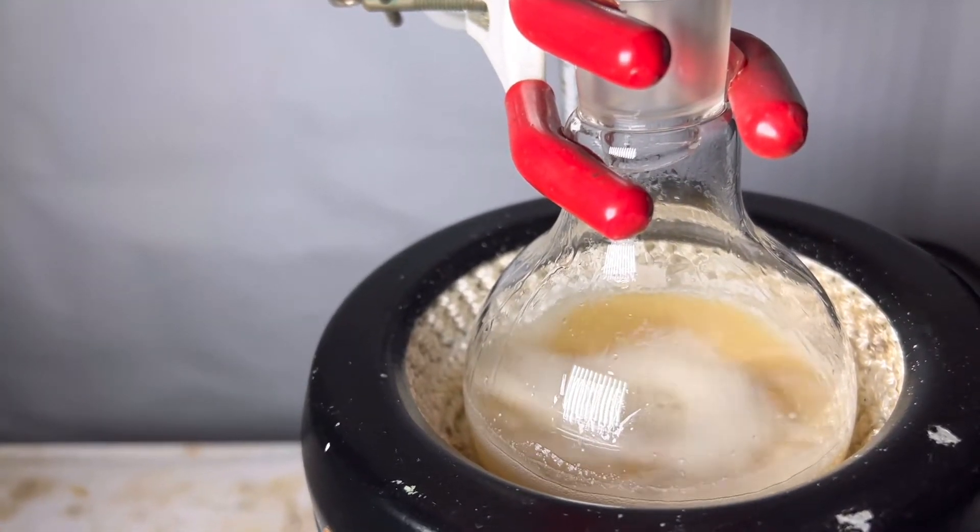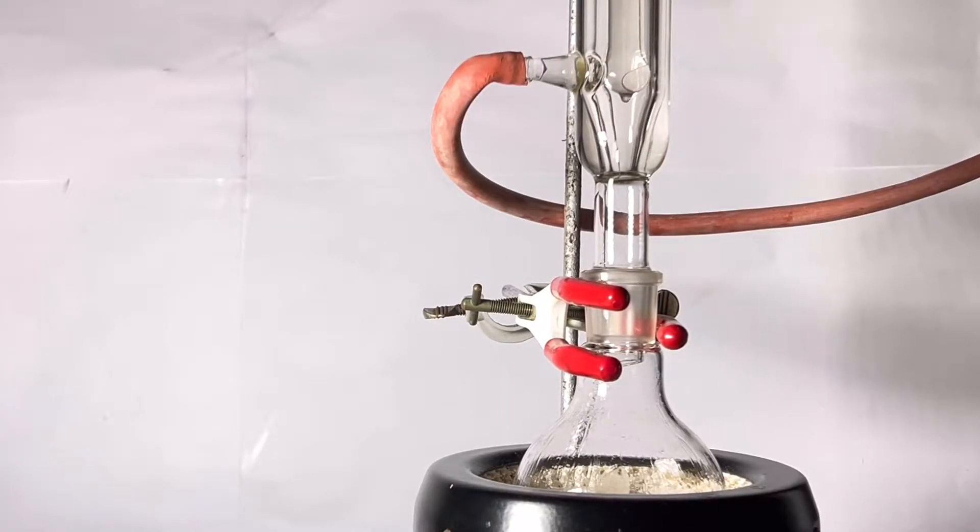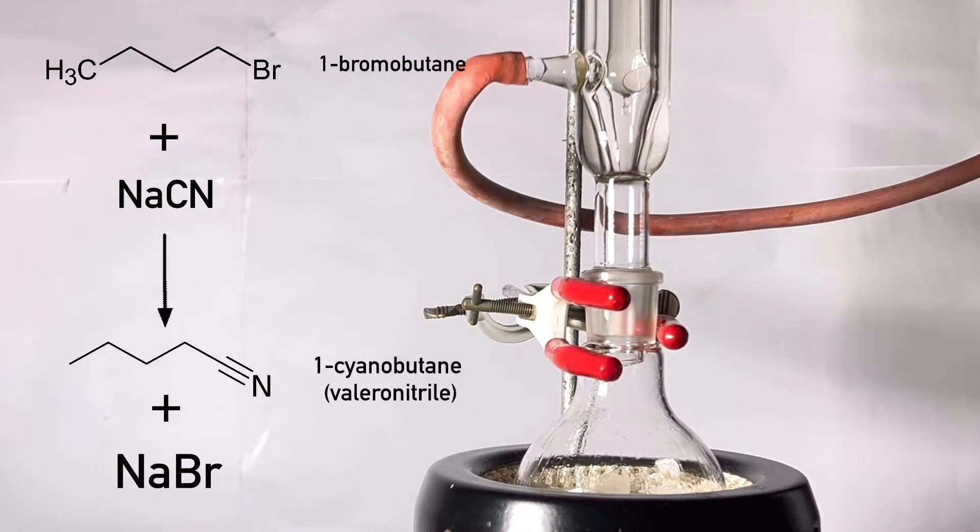Now let us see the reaction that is taking place. Here a substitution reaction takes place where the bromide ion of the alkyl bromide is substituted with the nitrile ion, also known as the cyanide ion, to form valeronitrile, also known as n-butyl cyanide, and sodium bromide is also formed as the side product.